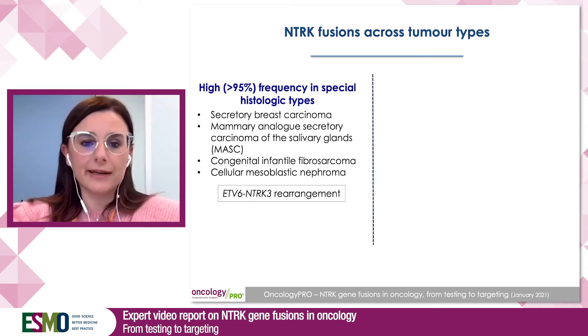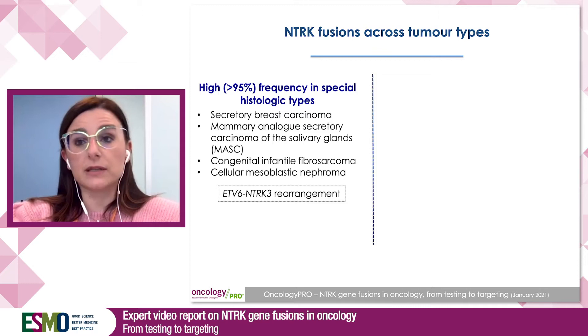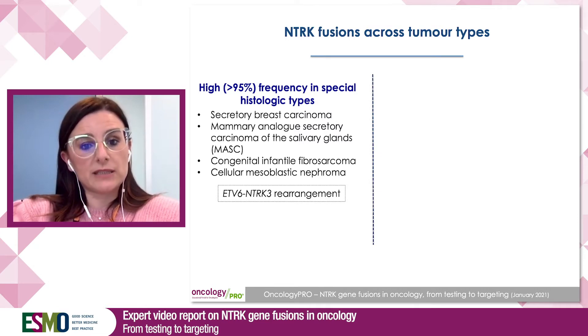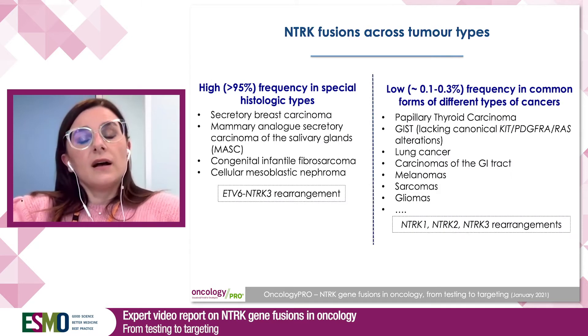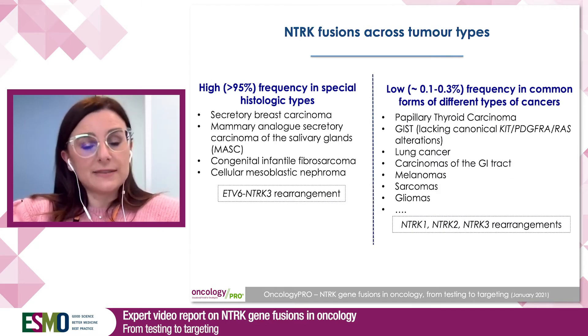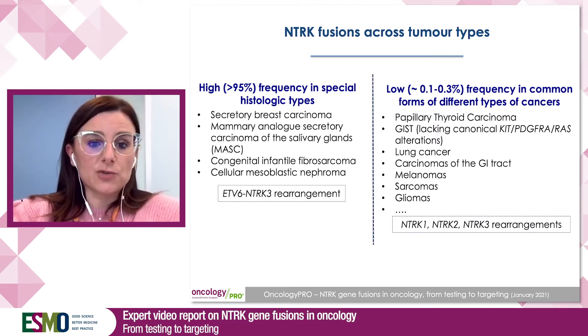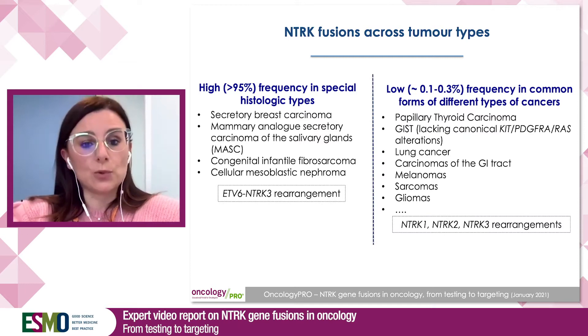In terms of epidemiology, there is a kind of paradox. We have some rare histologic types — for instance, secretory carcinoma of the breast or secretory carcinoma of the salivary gland — that harbor at very high frequency a specific NTRK3 rearrangement: the ETV6-NTRK3 gene fusion. On the other side, we have a plethora of different malignancies that can harbor at very low frequency either a rearrangement affecting NTRK1, 2, or 3.